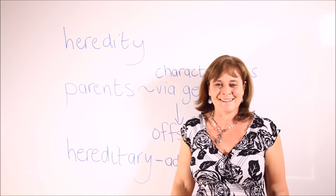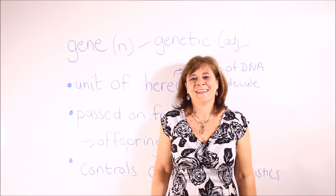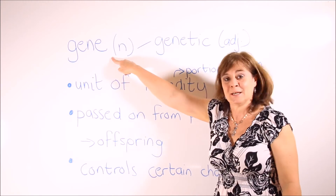Here is a sample sentence. Haemophilia is primarily a hereditary genetic disorder. The blood of haemophiliacs does not clot properly, which means haemophiliacs continue bleeding for prolonged periods after an injury.